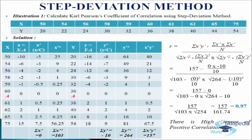In the last column we will write the product of x dash and y dash — using x dash y dash instead of x and y. We will calculate the products and get sigma x dash y dash equals to 157. Now we will write the formula of step deviation method as discussed earlier, put in the values from the table, and calculate. After calculation we will get r equals to 0.97, which is a high degree of positive correlation. As we have seen, in all methods we have taken the same illustration and got the same result — so the result is not affected by the method we choose.